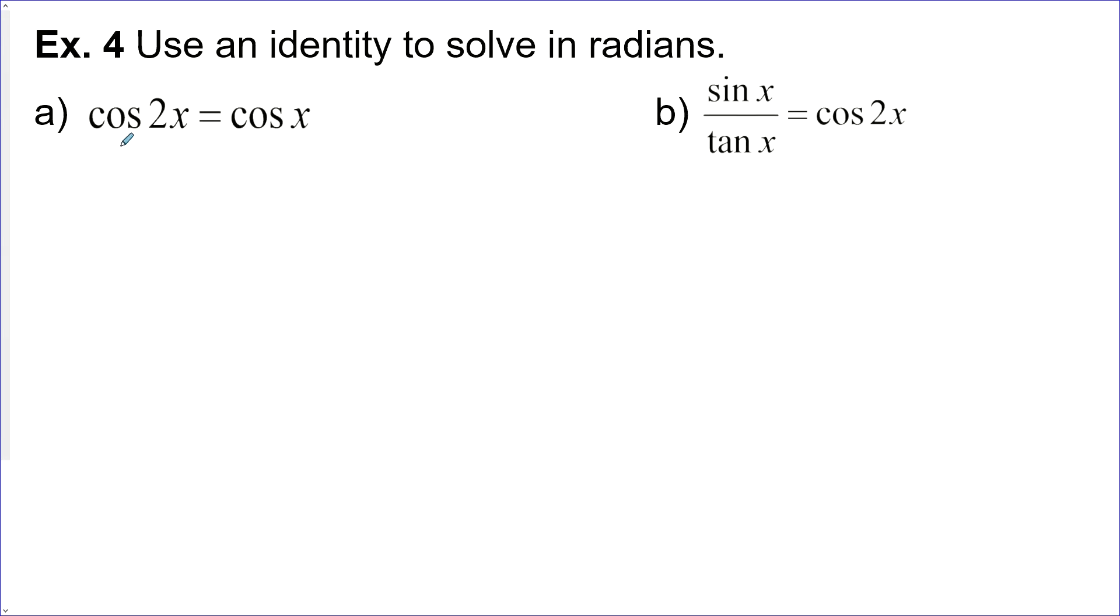For this one let's use cos's double angle identity. Now I probably want something with cos in it because I have another cos on the right side. So I'm going to use 2 cos squared x minus 1 to get rid of cos's double angle there. Next this now looks like a quadratic so I'm going to move it all to one side. 2 cos squared x minus cos x minus 1 equals 0.